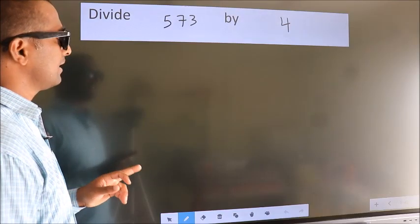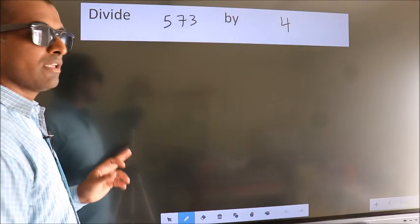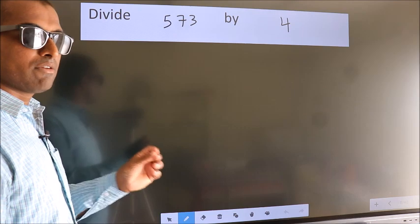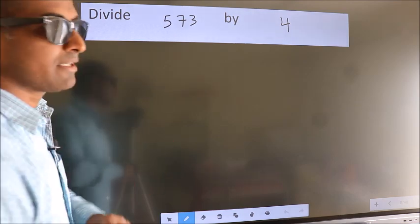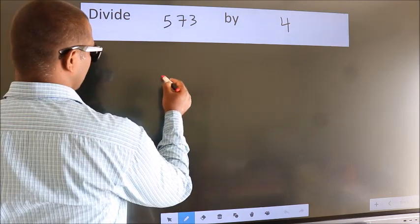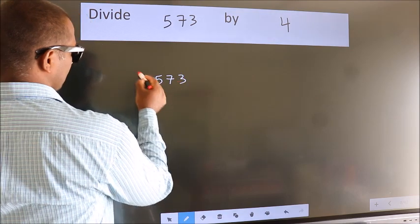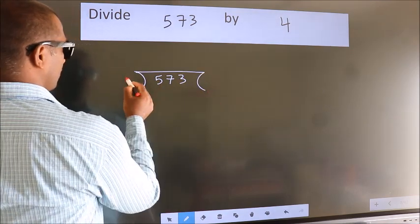Divide 573 by 4. To do this division, we should frame it in this way: 573 here, 4 here.